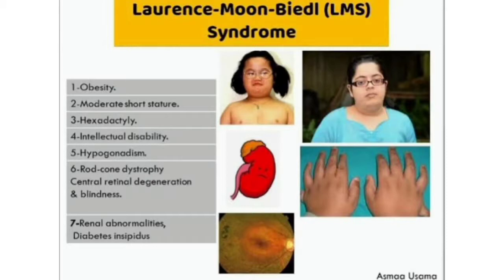Polydactyly means an increase in the number of digits; syndactyly means the joining together of digits. Patients also have renal abnormalities — sometimes requiring renal transplantation — and diabetes insipidus. On ophthalmologic examination, you can find rod-cone dystrophy and central retinal degeneration.